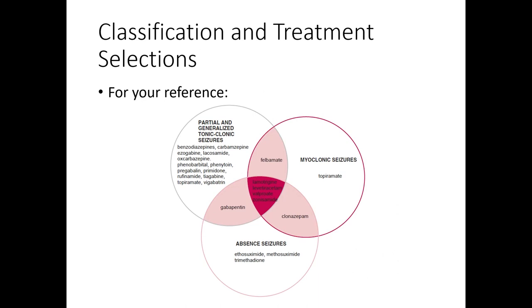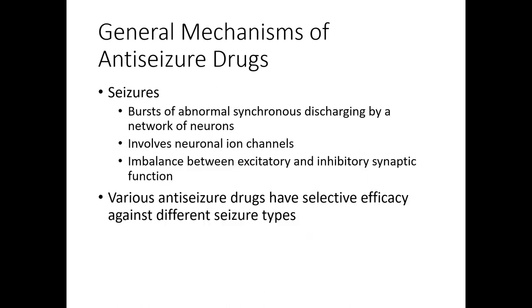There are different classifications of seizures, each with different treatments. This particular slide is for your reference — you are not going to memorize it. There are agents that are fairly general and work across different types of seizures: absence seizures, myoclonic seizures, partial and generalized tonic seizures. Those drugs are likely the ones you'd frequently dispense in a retail or community pharmacy.